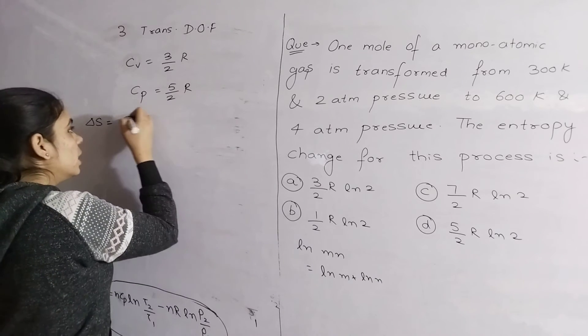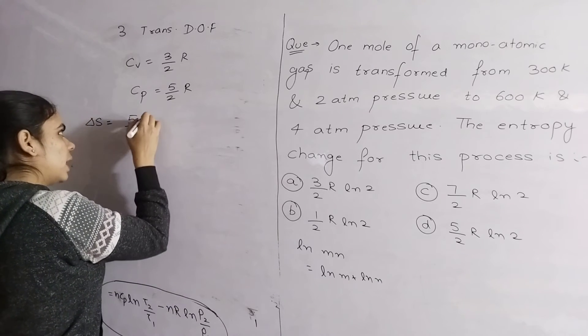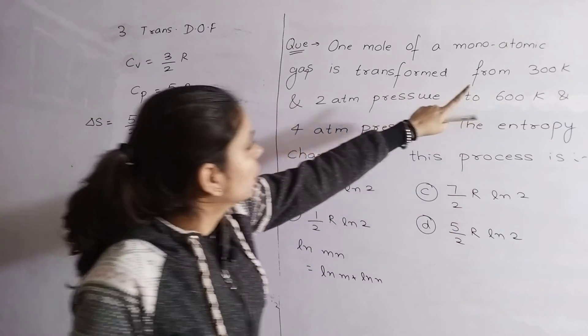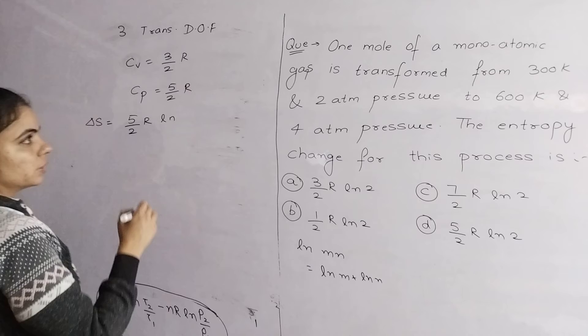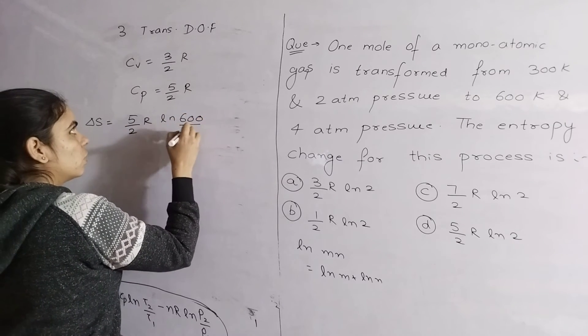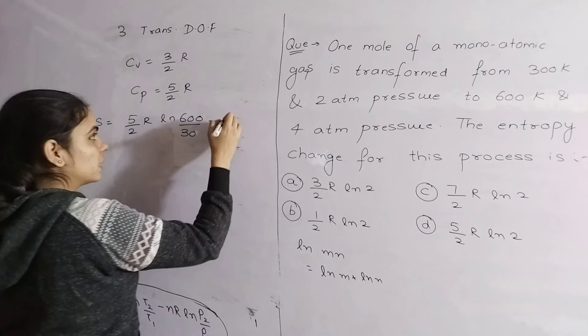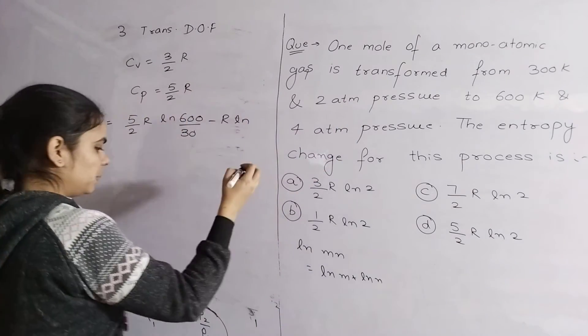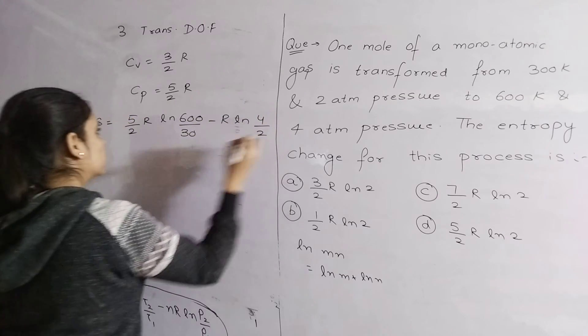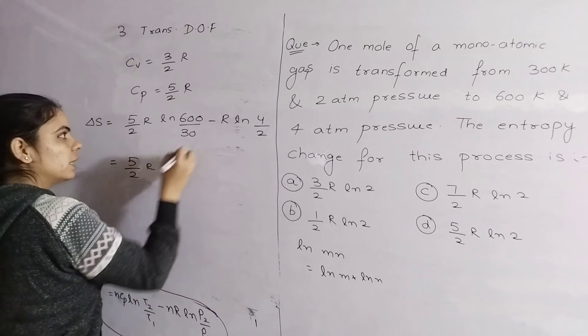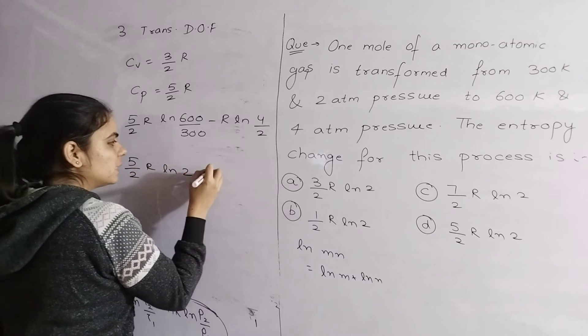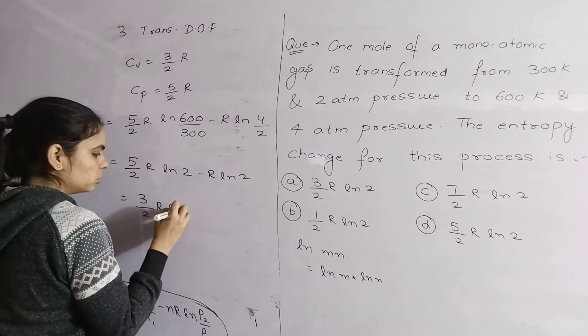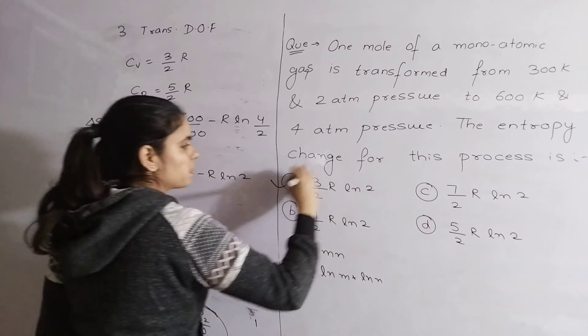Let's put it in. Delta S will be equal to, N is 1, CP is 5/2 R, ln(T2/T1) - T2 is 600 and T1 is 300, so that will be 600/300 - minus R ln(P2/P1), pressure is 4 divided by 2. So that will be equal to 5/2 R ln 2 minus R ln 2, which equals 3/2 R ln 2. So the correct answer to this question is option number 3.